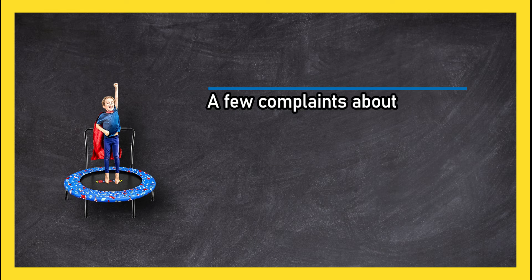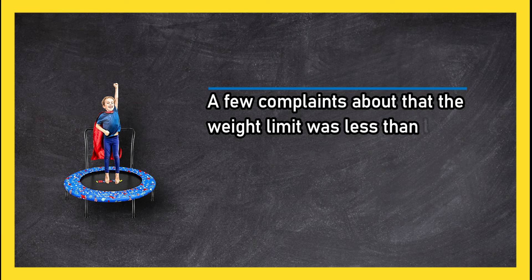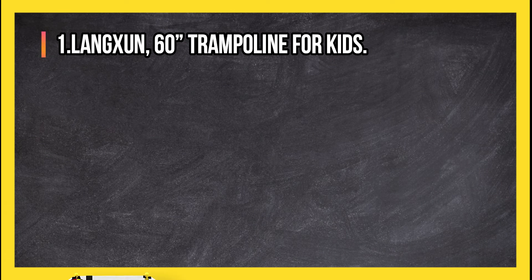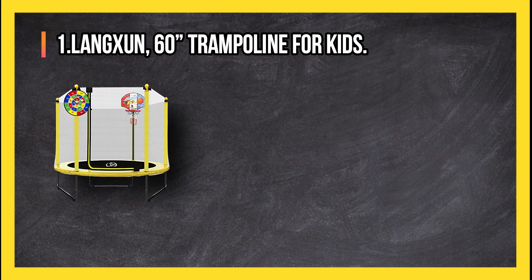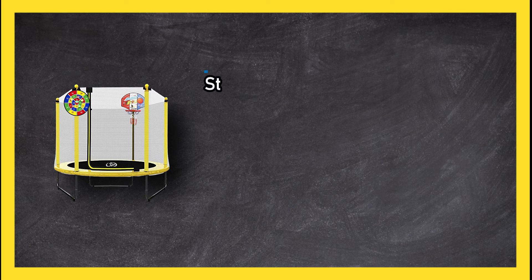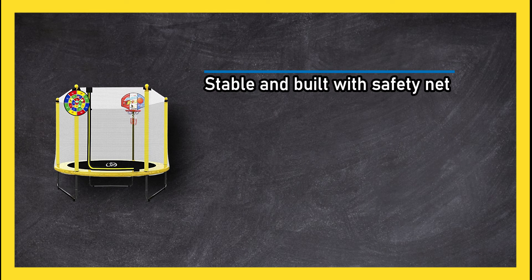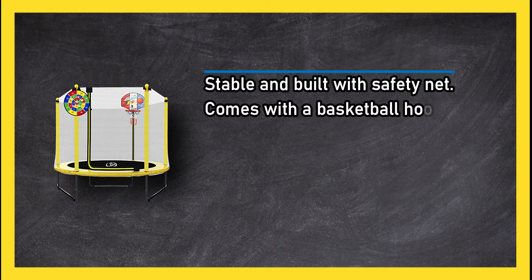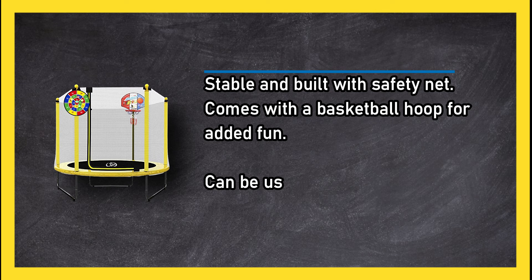A few complaints that the weight limit was less than listed. At number one, Langchon 60 trampoline for kids. Stable and built with safety net, comes with a basketball hoop for added fun. Can be used inside and outside, easy to assemble, holds up to 220 pounds.